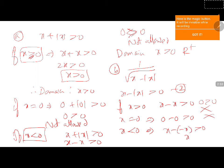Therefore, if x is less than 0, then x minus of minus x greater than 0, which gives 2x greater than 0, so x greater than 0. But this is not matching with x less than 0, therefore this is also not considered. Therefore, the domain is the null set.